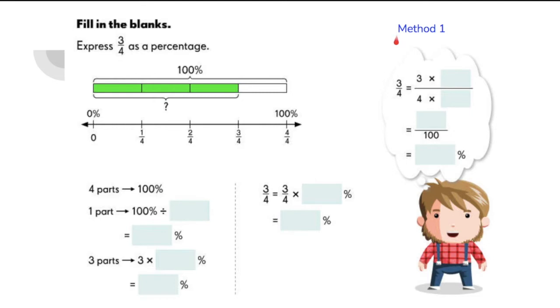Method 1. This method, all we need to do is to rewrite the fraction as one with a denominator of 100. And to do that, we just need to multiply the numerator and the denominator by 25.